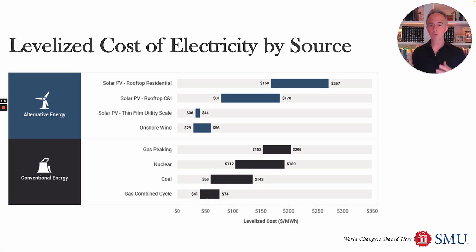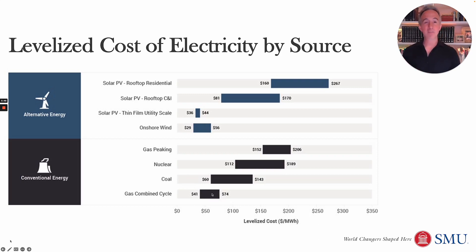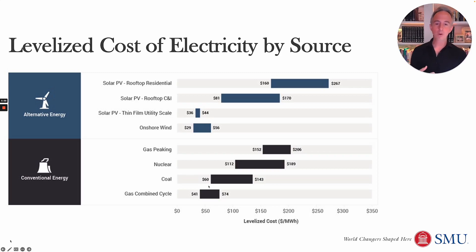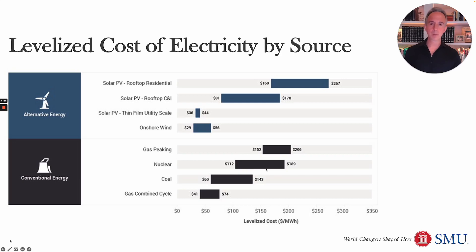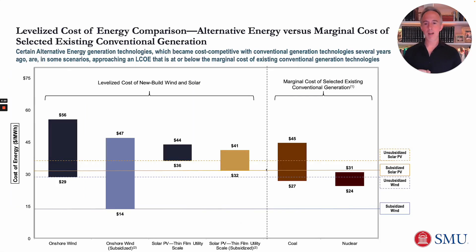If solar and wind tend to be cheapest and have no emissions, why don't we just rely on them? Obviously, because often they're not providing any electricity at all. So gas has the advantage of not just being cheaper than other sources, but being the cheapest of those reliable power sources you can depend on. If you have a system of solar, wind, and natural gas, they can work together — solar and wind providing power when available, and natural gas providing electricity to back it up. It's hard for other reliable sources like nuclear to compete with that cheap mix.